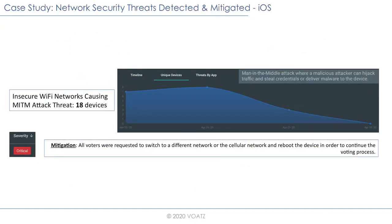Diving one level deeper on the iOS side into network security threats — this data is available in the open dataset, part one. Among the few thousand participants, 64% were using iOS. Of those, 18 devices were detected where the Wi-Fi was deemed unsafe, creating potential for a man-in-the-middle attack. Those users were unable to complete the process and were asked to contact the support team, who requested them to switch to a cellular network or different Wi-Fi network. Once they did, they were able to proceed.